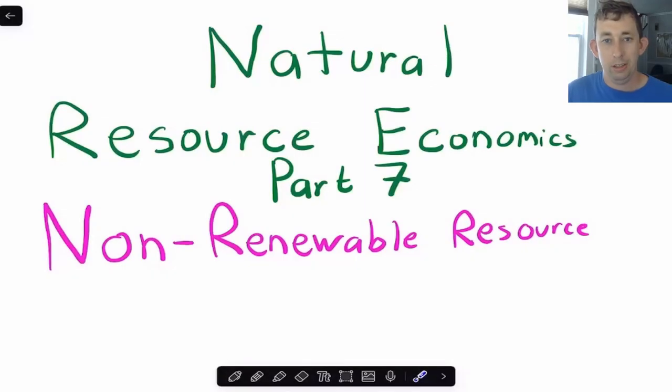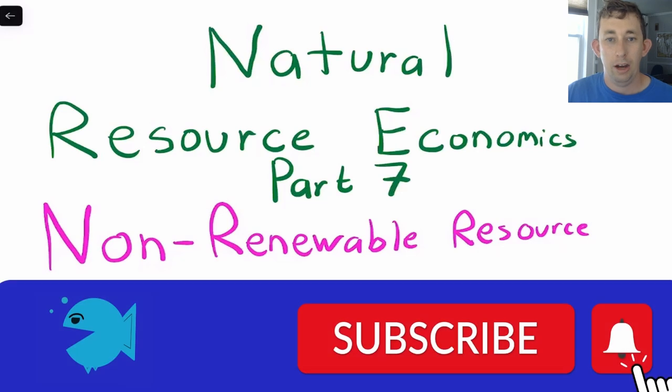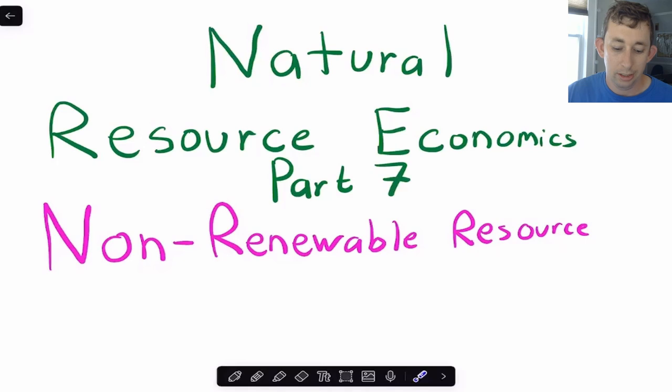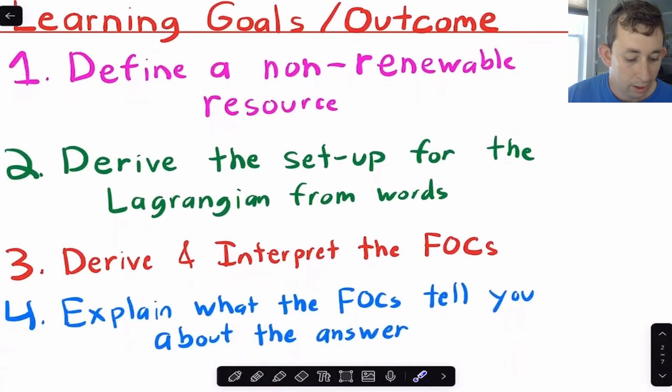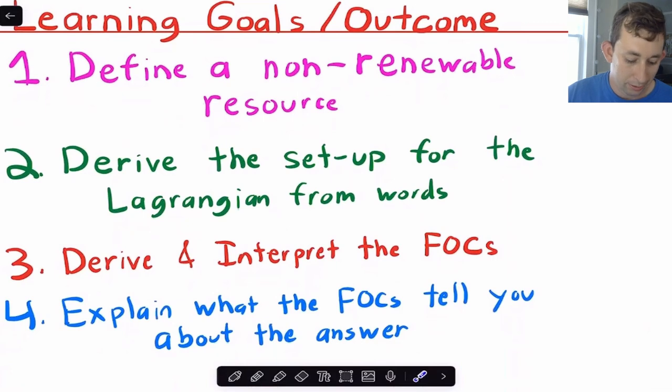Hi guys, welcome back to InCase of Econ Struggles. Welcome to another natural resource economic struggle. Today I'm talking about non-renewable resources, mainly the first order conditions and how to write the Lagrangian. As usual, timestamps are below if you would like to jump around to any of these goals and outcomes. Let's go ahead and jump right into it.